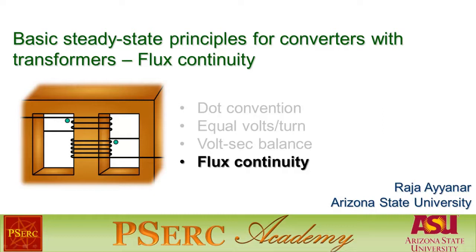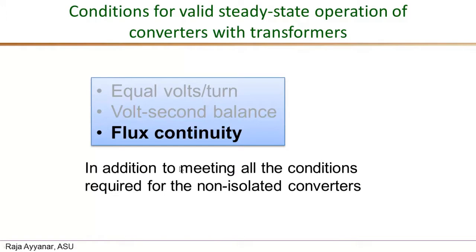This video continues the discussion on basic steady state principles for transformer-isolated DC-DC converters. The specific topic is the requirement on flux continuity. In previous videos we learned that transformer-isolated converters need to meet three additional requirements beyond those for non-isolated converters. We've already covered equal volts-per-turn and volt-second balance for transformer windings; this video focuses on flux continuity in the transformer core.